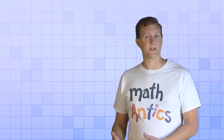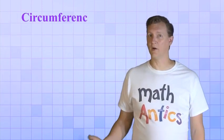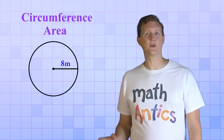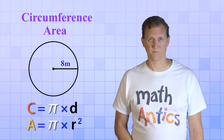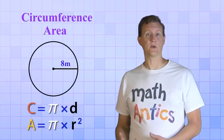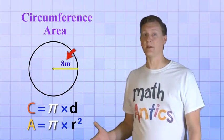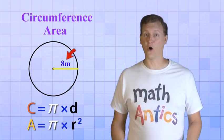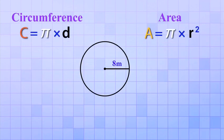To help you see that difference in action, let's find both the circumference and the area of this circle using our two formulas. The only thing we know about this circle is that the radius is 8 meters. Luckily, that's all we need to know. First, we use our formula for circumference. Circumference equals Pi times diameter.